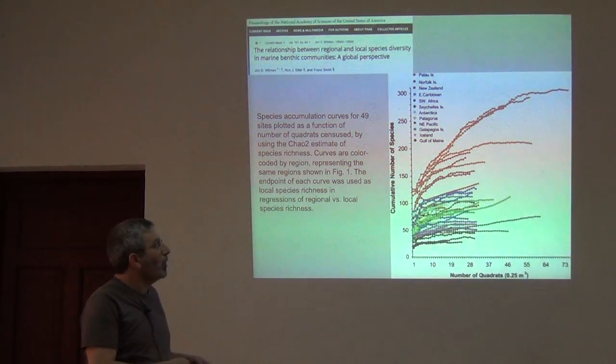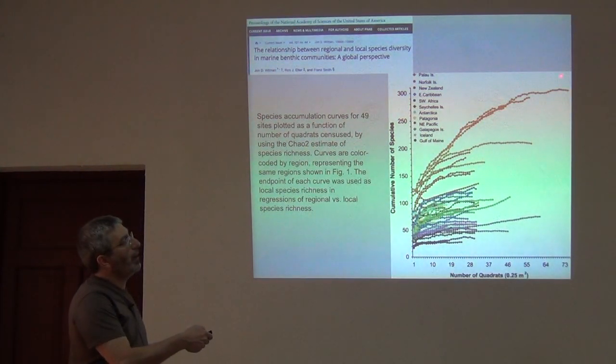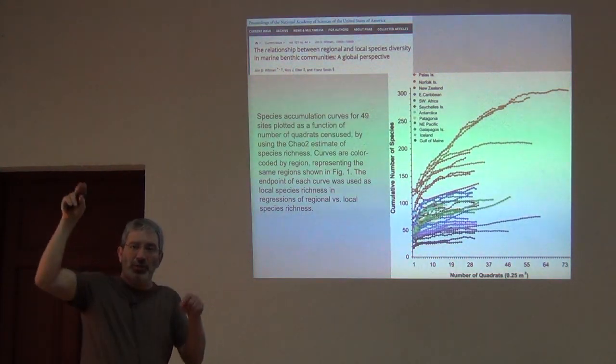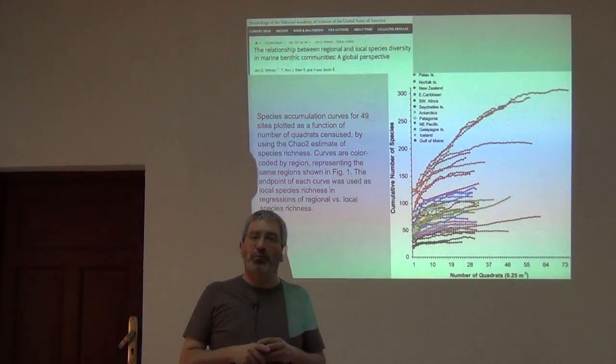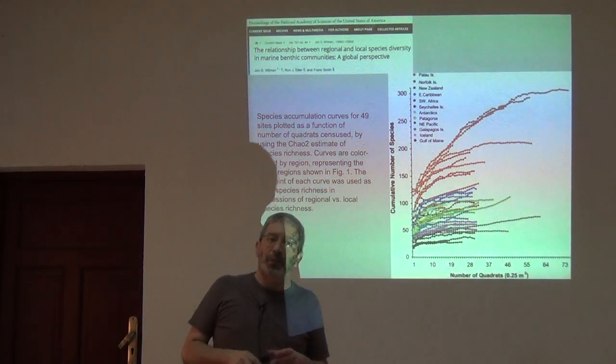So, usually, when through time you get these jumps and jags, that is a function of heterogeneity of some sort.